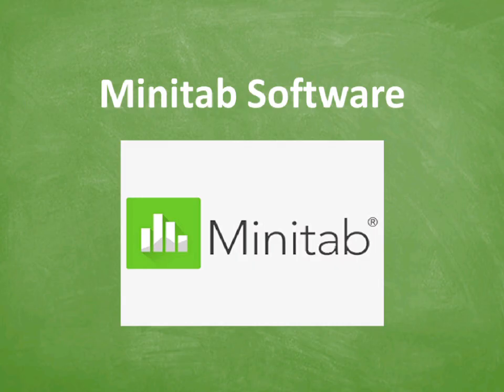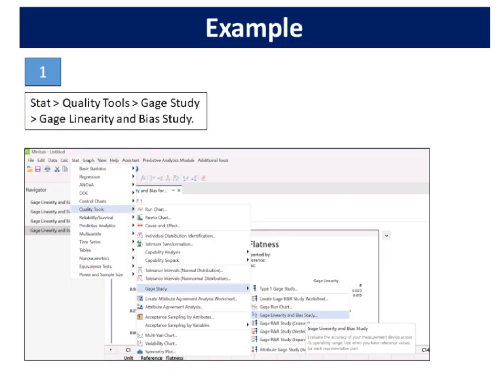Next, I am going to show you the steps of performing bias and linearity study using Minitab software. Select Stat, Quality Tools, Gauge Study, Gauge Linearity and Bias Study.